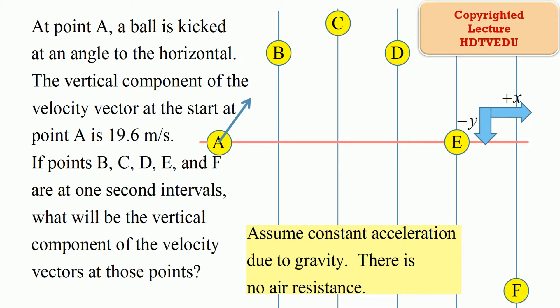At point A, a ball is kicked at an angle to the horizontal. The vertical component of the velocity vector at the start, at point A, is 19.6 meters per second. If points B, C, D, E, and F are at one-second intervals, what will be the vertical component of the velocity vectors at those points?